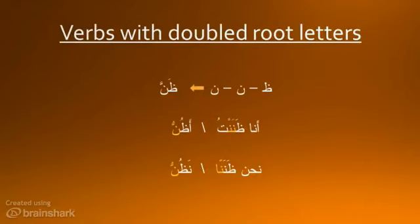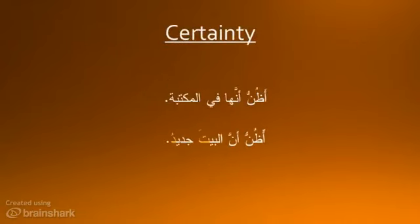The rest of these conjugations are in your book on page 210. It would be a good idea to spend some time memorizing them. ظَنَّ means to think something is true — for example, to think that someone is in the library.